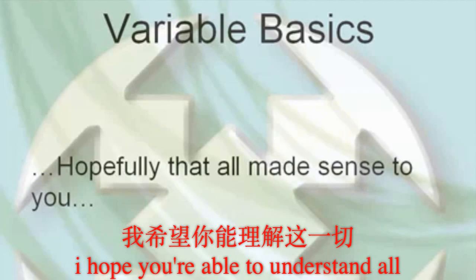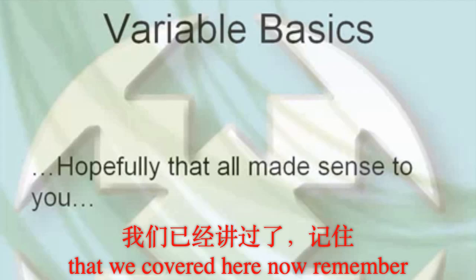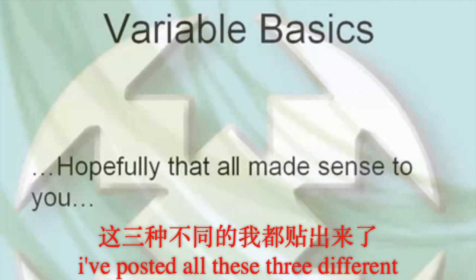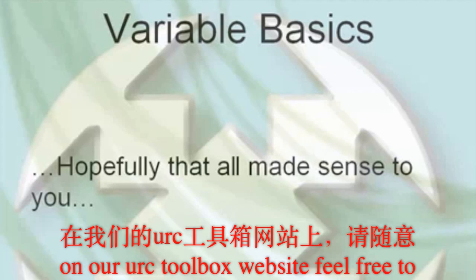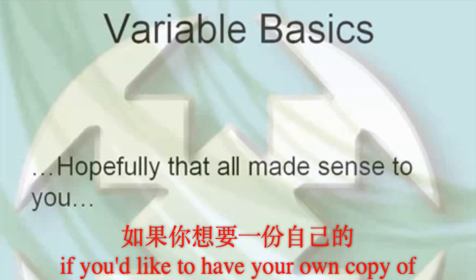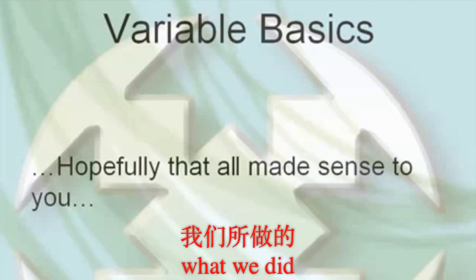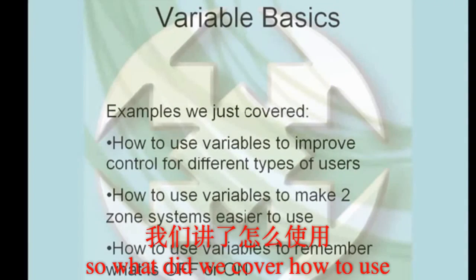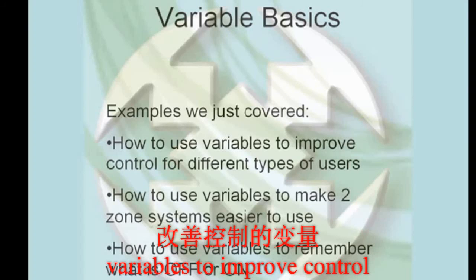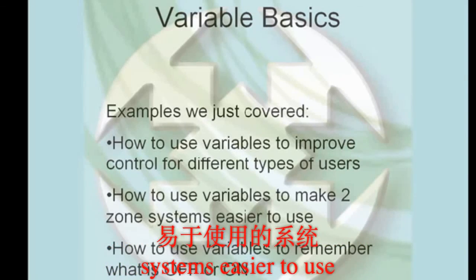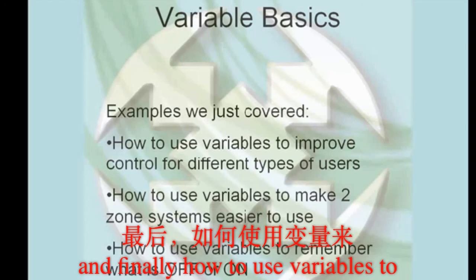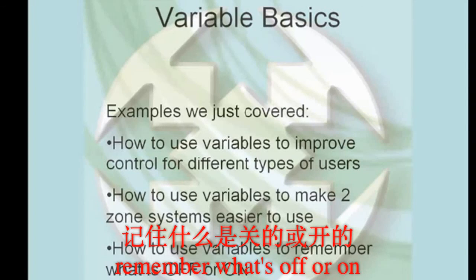I hope you're able to understand all that we covered here. I've posted all three different CCP example files on our URC toolbox website — feel free to download them if you'd like to have your own copy of what we did. So, what did we cover? How to use variables to improve control for different types of users. How to use variables to make two zone systems easier to use. And finally, how to use variables to remember what's off or on.